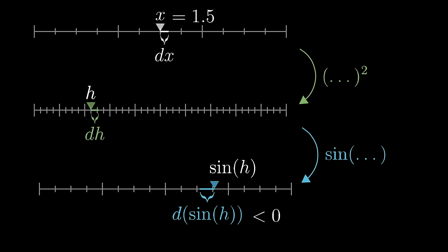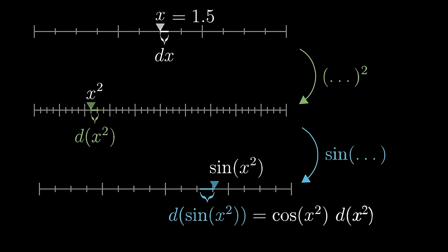And once again, we can use our knowledge of the derivative of the sine. This d sine of h is going to be about cosine of h times dh. That's what it means for the derivative of sine to be cosine. And unfolding things, we can just replace that h with x squared again, so we know that that bottom nudge is going to have a size of cosine of x squared times d x squared. And in fact, let's unfold things even further: that intermediate nudge d x squared is going to be about 2x times dx.